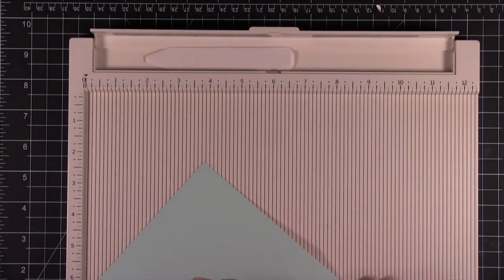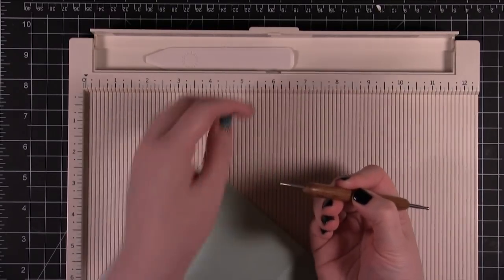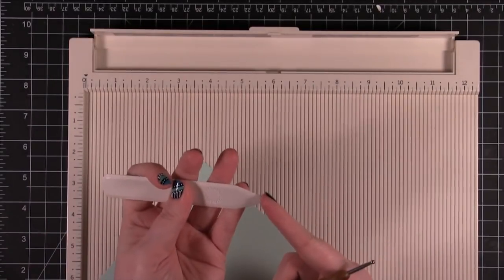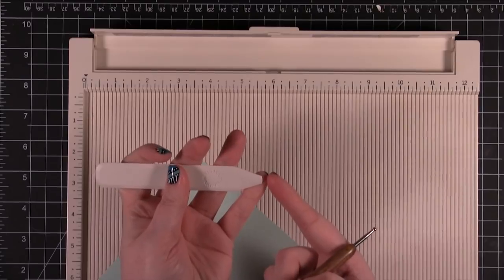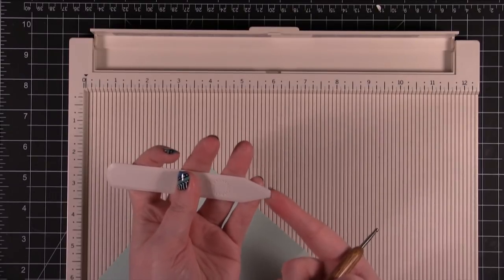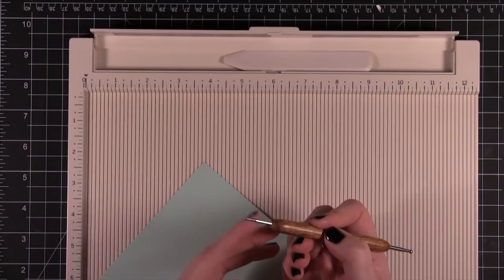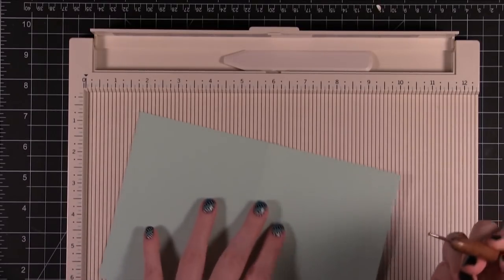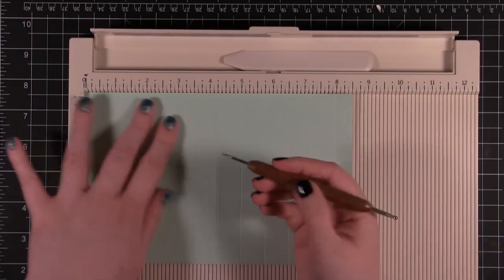The reason why I use a stylus is because it has a rounded tip. This bone folder I noticed as I was using it that it started to wear down. This used to have a much more pointed tip and the more I used it the more it wore down. I started using a stylus because it has this little rounded tip on it and it has a little bit of a smoother score on it.